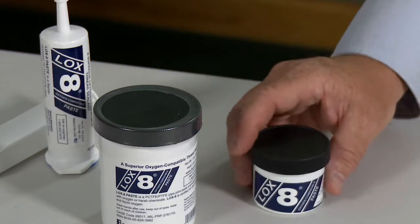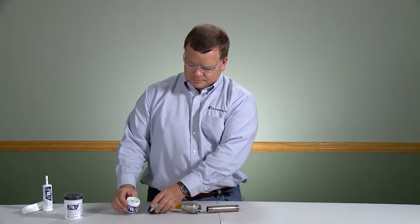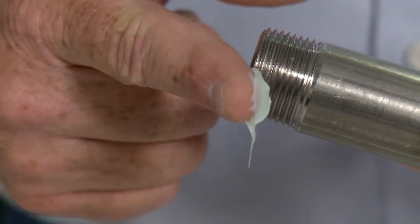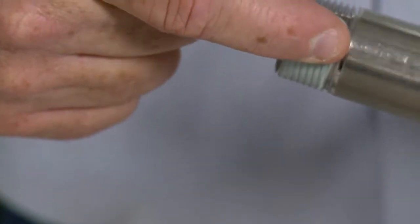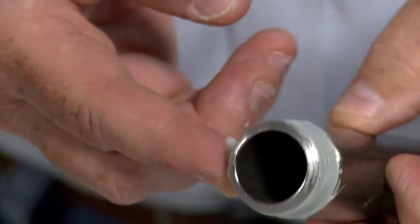This is LOX8 100 gram jar as supplied to you. What you want to do is apply LOX8 1 to 2 threads back from the end of the fitting so that LOX8 does not end up in the product stream when you tighten it down.